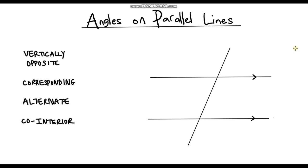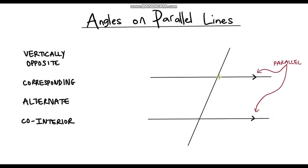Hello and welcome to a video on angles on parallel lines. Down here we've got one pair of parallel lines. The chevrons or arrows tell us that those two lines are parallel. We've also got a line that cuts right through these parallel lines, and this line is called a transversal.